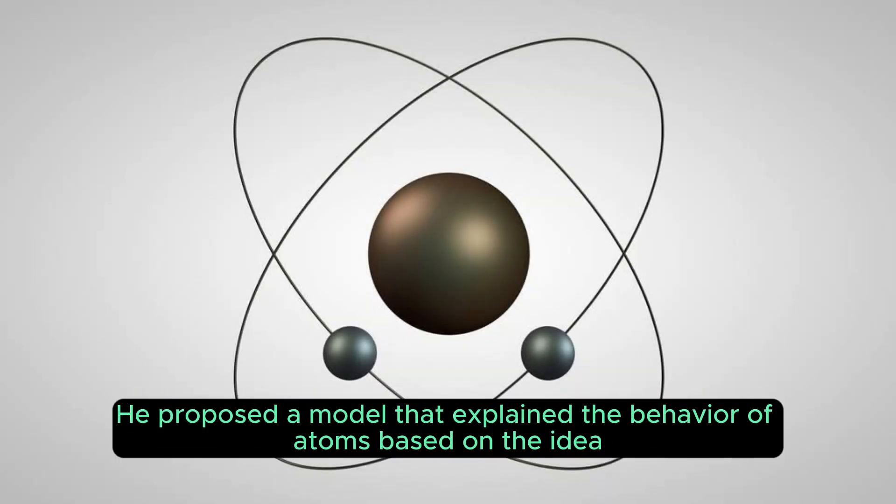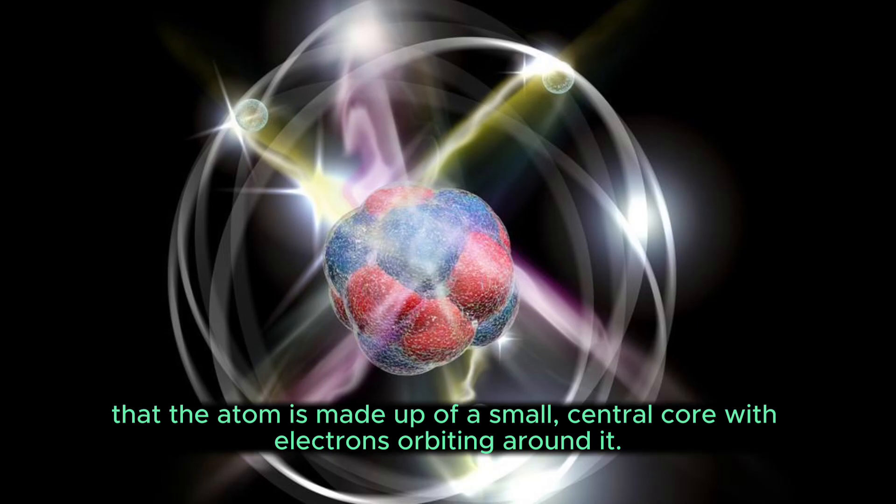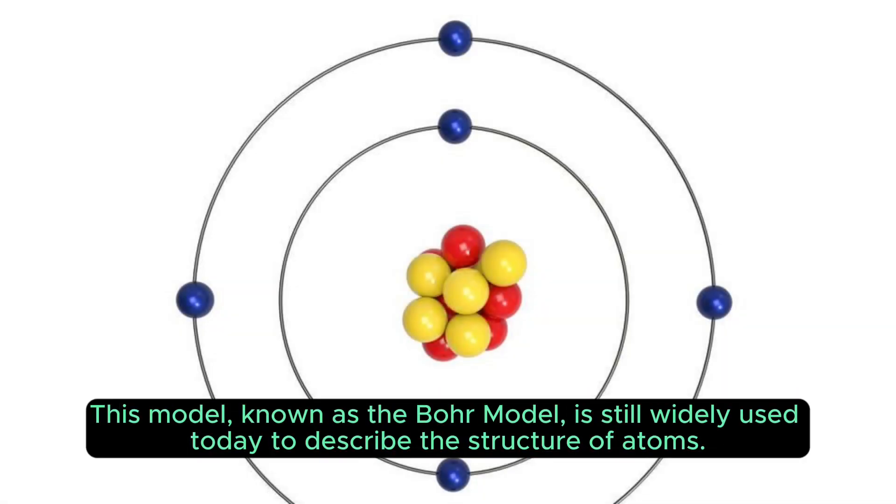He proposed a model that explained the behavior of atoms based on the idea that the atom is made up of a small, central core with electrons orbiting around it. This model, known as the Bohr model, is still widely used today to describe the structure of atoms.